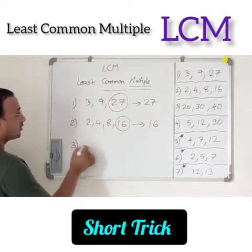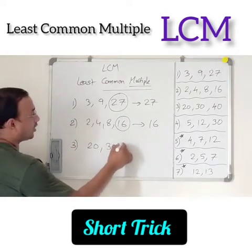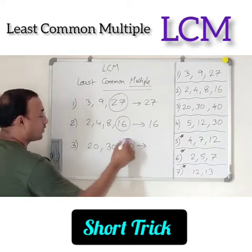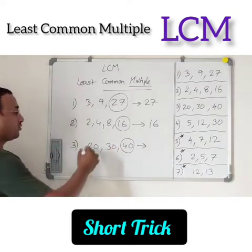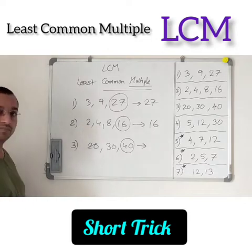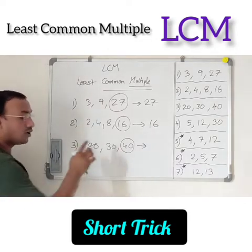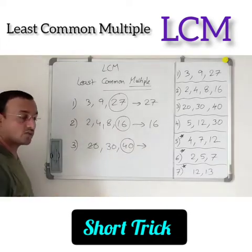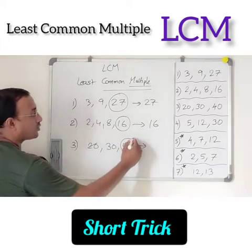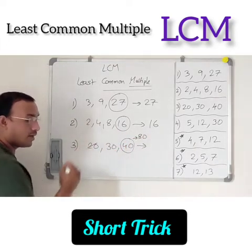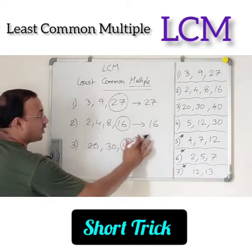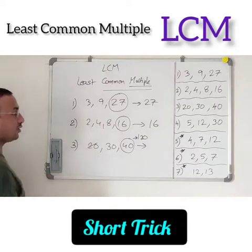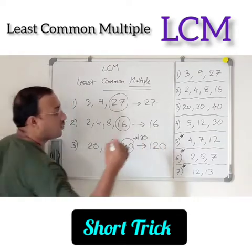Next, the third one: 20, 30, 40. What is the largest number? 40. Is it divisible by 20? Yes — let us cancel this. Is it divisible by 30? No. Then what to do? Take the multiples of 40. 40×2 = 80 — is 80 divisible by 30? No. 40×3 = 120 — is 120 divisible by 30? Yes, it is divisible. Therefore, the LCM is 120.